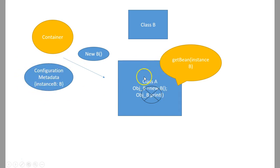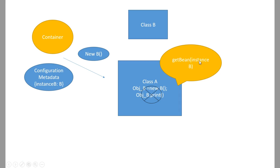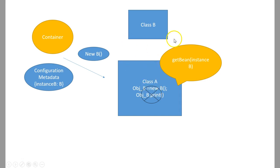In the case of Java, whenever class A requires a dependency, it will say context.getBean — give me instance B. This instance B is like an ID or token used by the container to understand what class it needs to instantiate. Once this statement is executed, the container goes to its configuration metadata, checks what class to instantiate for instance B, creates an object of class B, and gives it to class A.